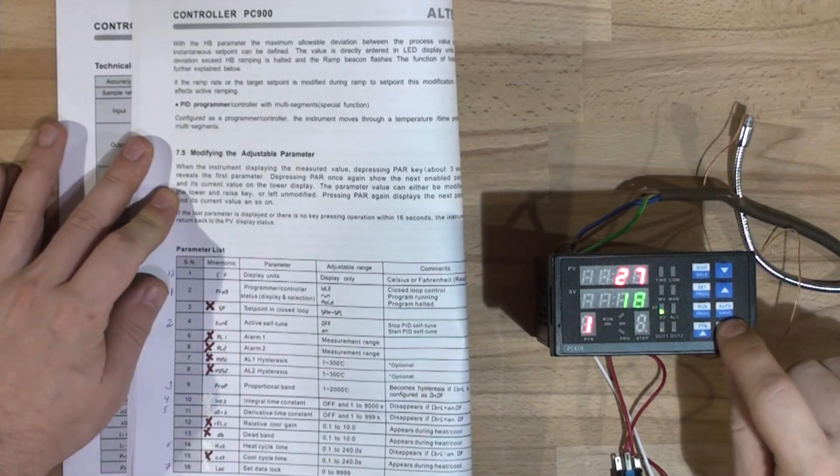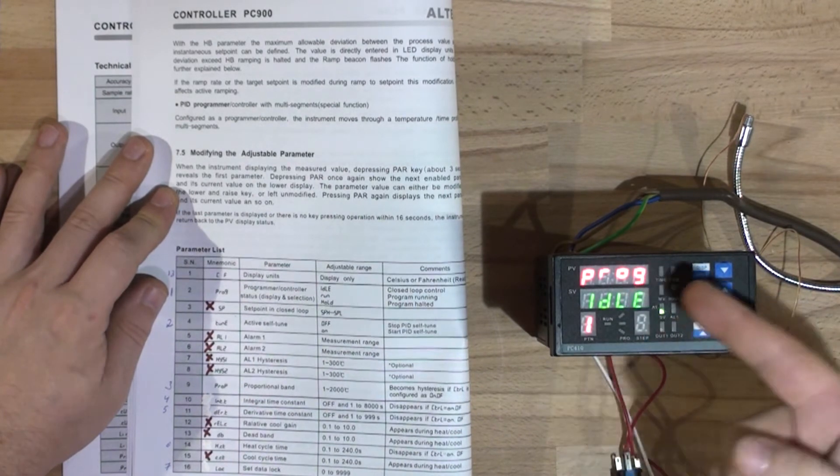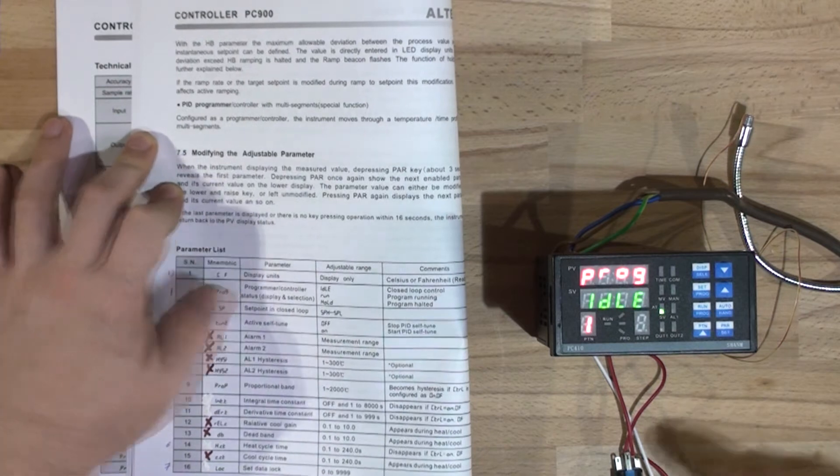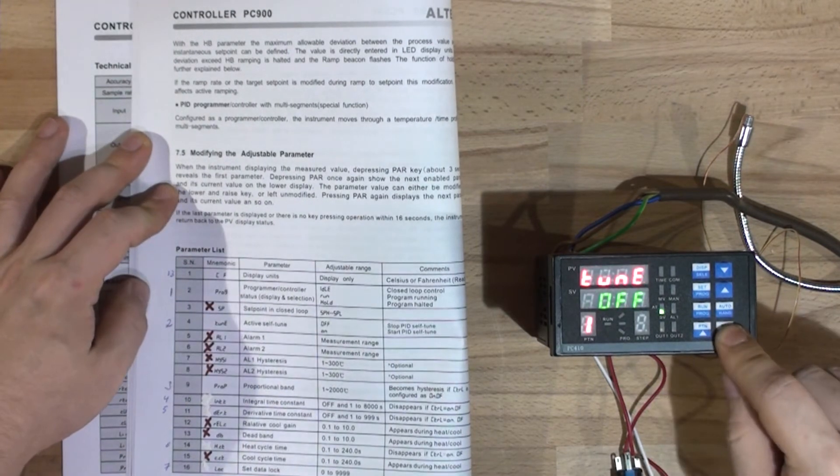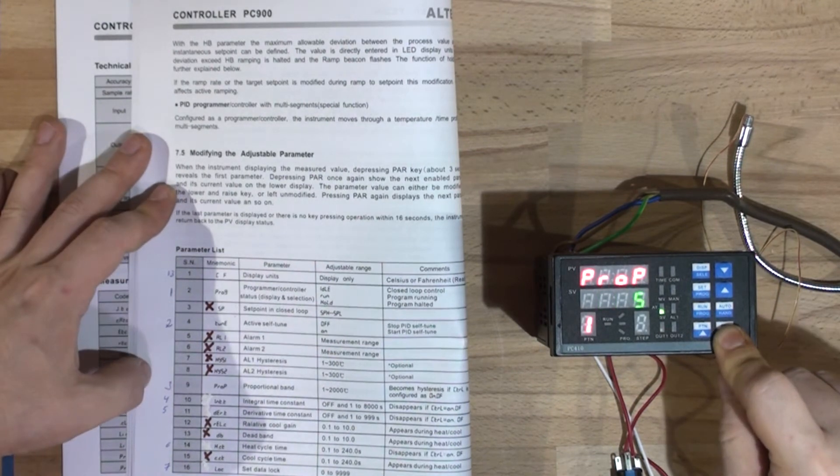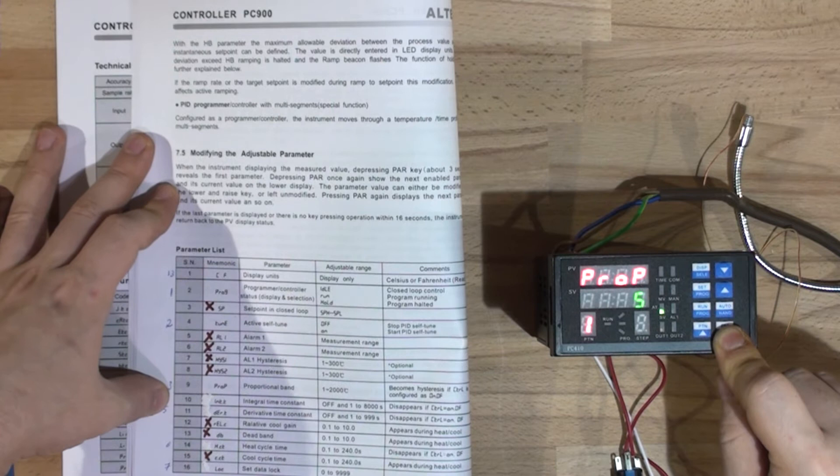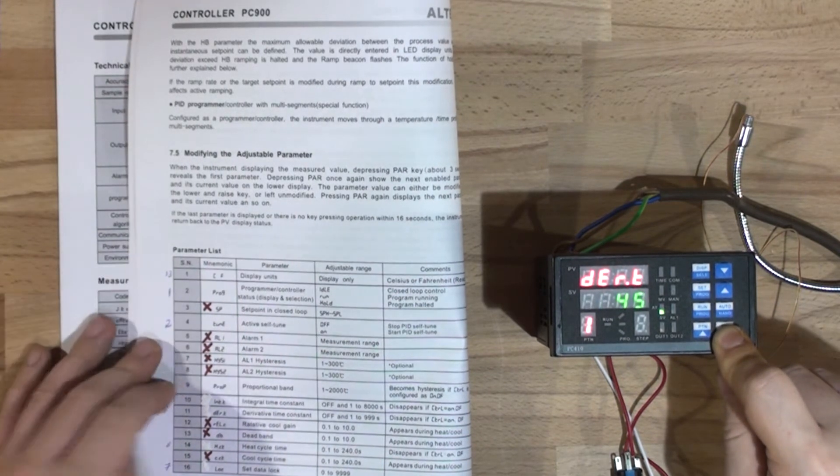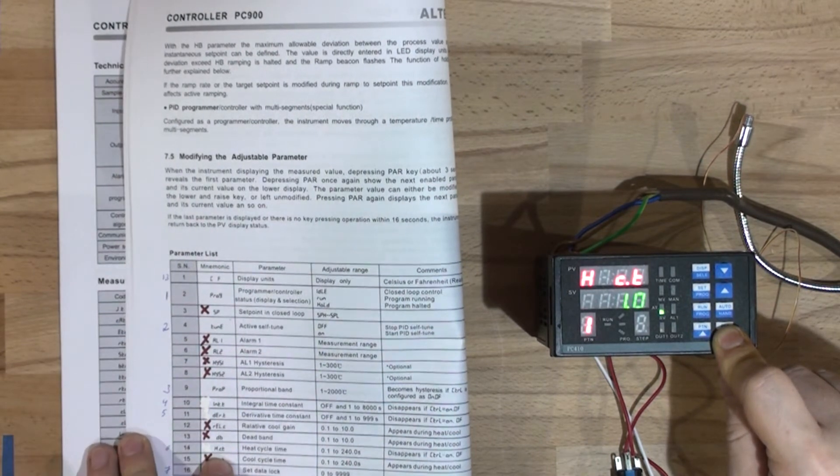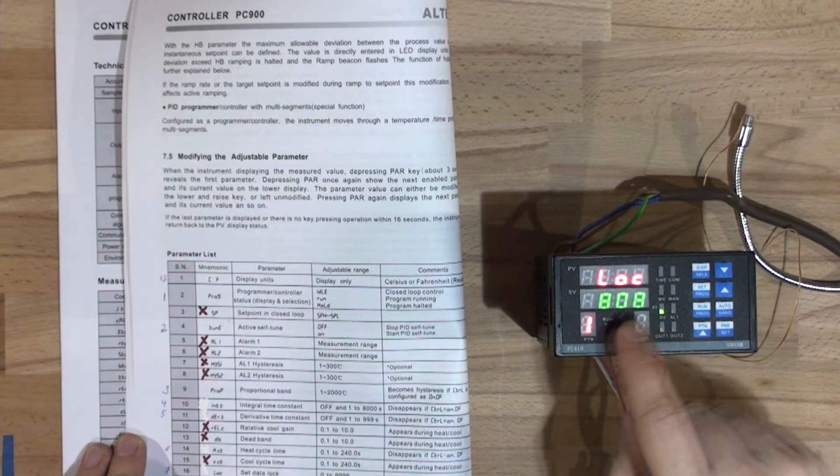This is the basic menu. To get into the menu, you press PI and hold it down for three seconds. Then first thing on the menu is the program, which says it's idle. The first one's supposed to be Celsius or Fahrenheit on the menu, but it's not. The next one is tune, that's the auto tune, and that's number four on the menu. The next one is prop, so that's number nine on the menu, proportional band.